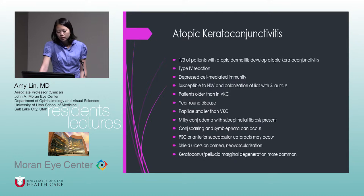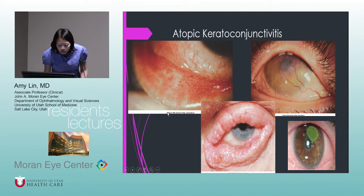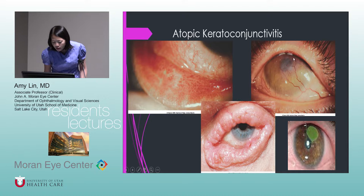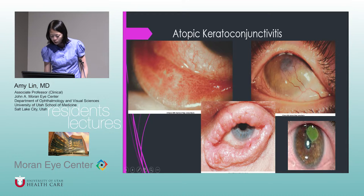This is not a benign disease. Patients can get PSC cataracts, shield ulcers on the cornea — usually a response to the papillae on the upper tarsal conjunctiva — corneal neovascularization, and there are associations with keratoconus and pellucid marginal degeneration. This is showing some sub-epithelial fibrosis and papillae, and then massive corneal neovascularization with very thickened eyelids and possible symblepharon. This is an example of a shield ulcer — a chronic corneal epithelial defect, usually found superiorly.